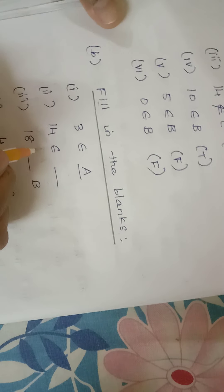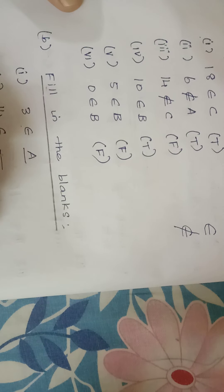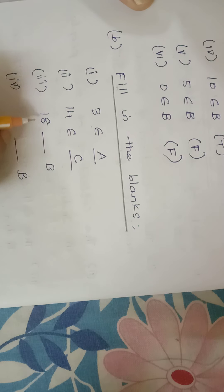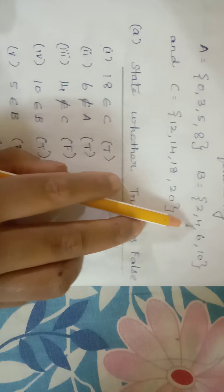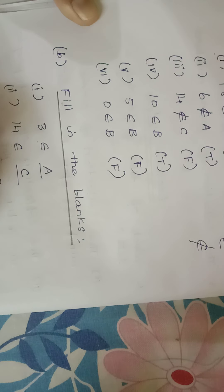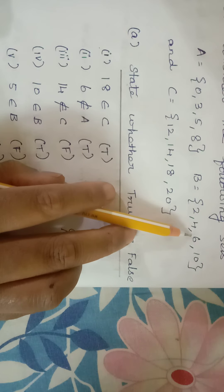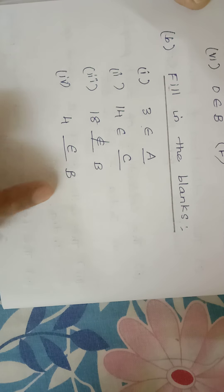Now fill in the blanks. 3 belongs to A. 14 belongs to C. 18 — does 18 belong to B? No, so 18 does not belong to B. 4 belongs to B — yes, 4 is in B, so it belongs to B.